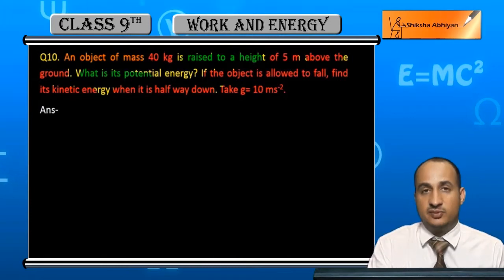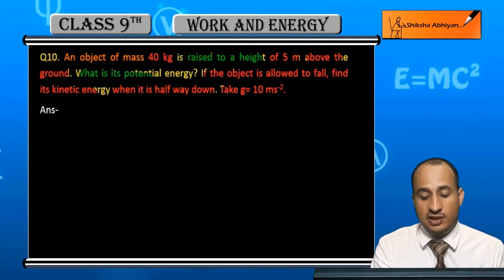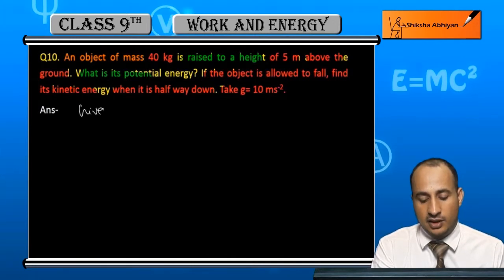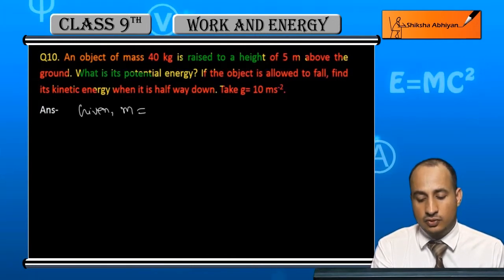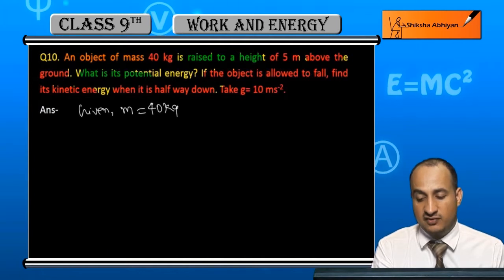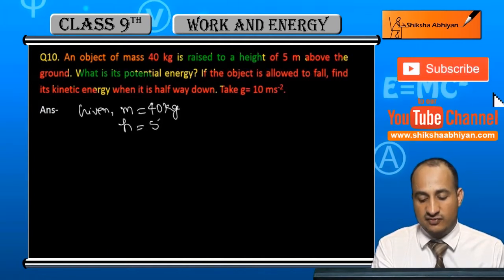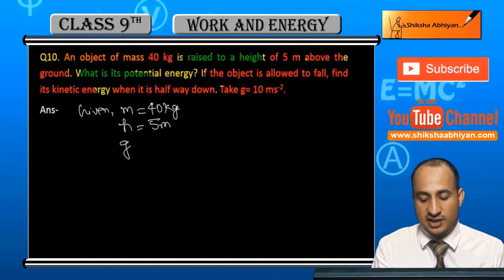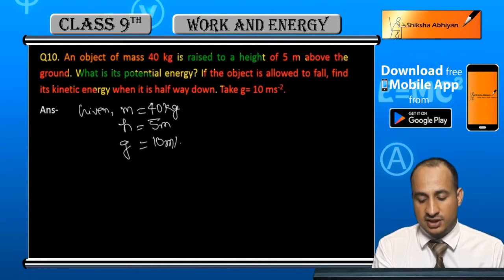Here is given m is equal to 40 kg, height h we have 5 meter, and g we have 10 meter per second square.